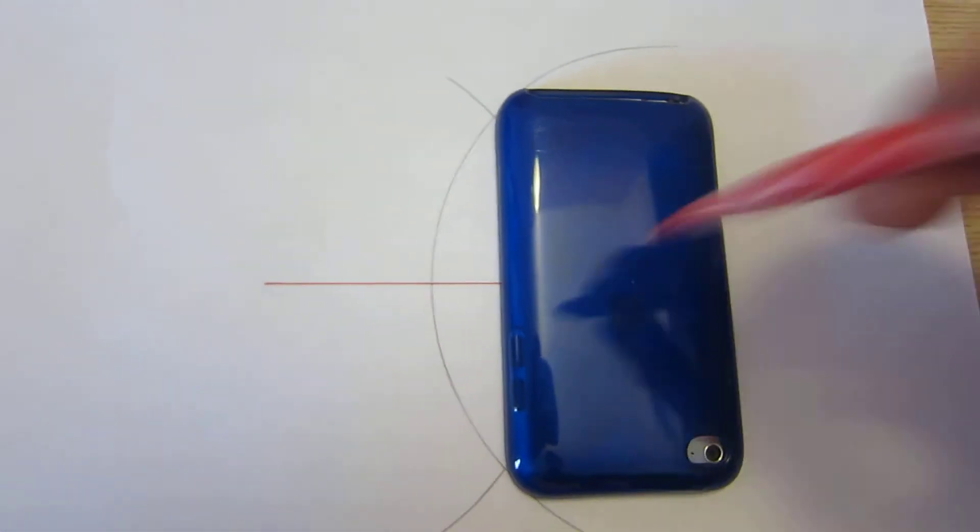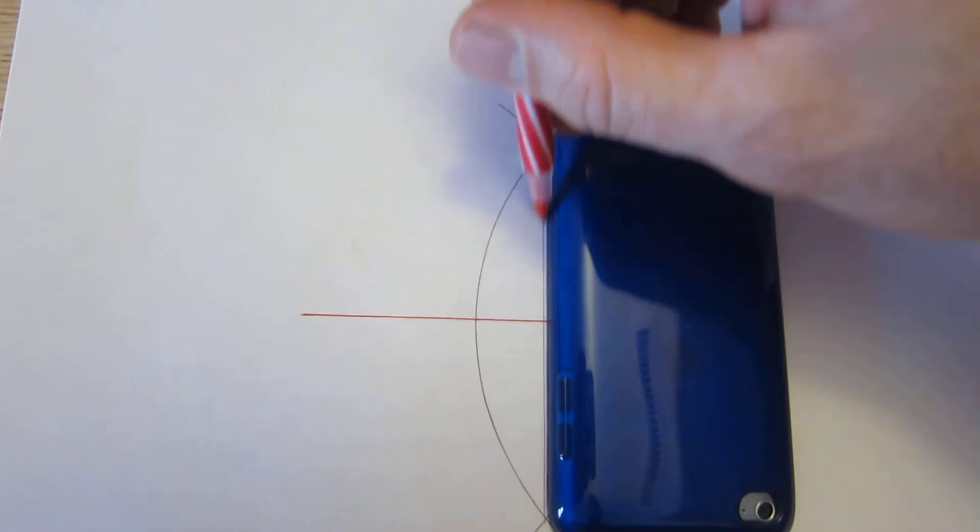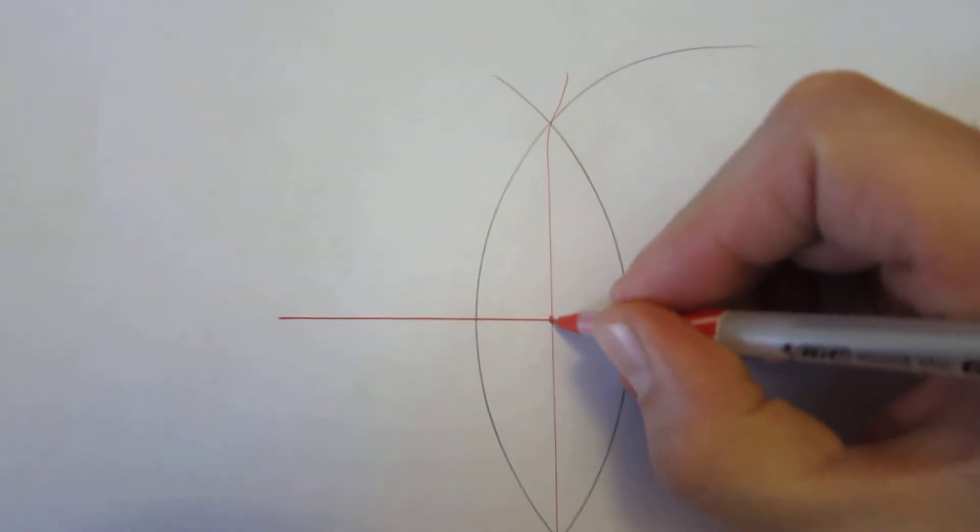You can then use a straight edge to draw a line, and where they cross is your middle. You've now bisected a line, or cut it in half at the middle.